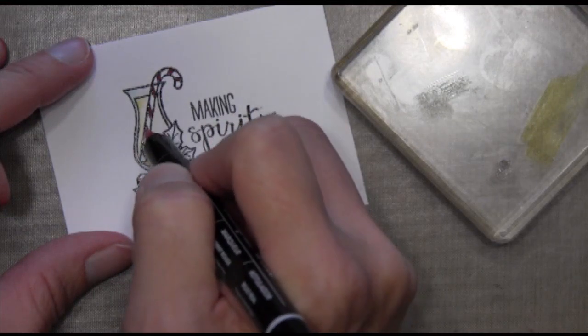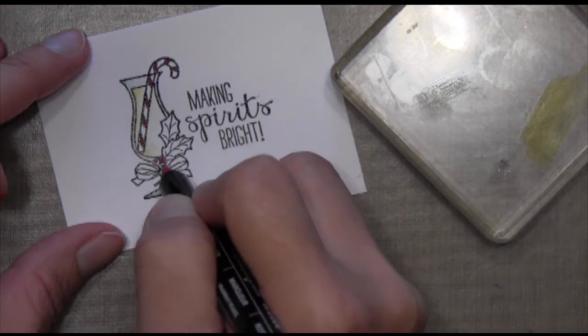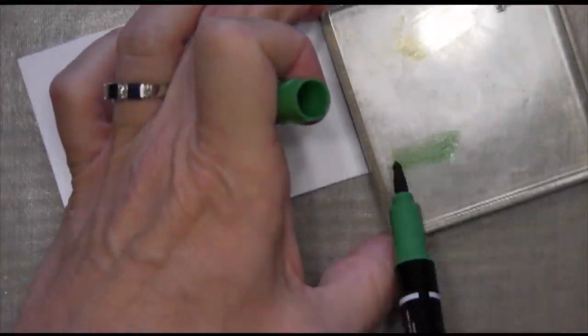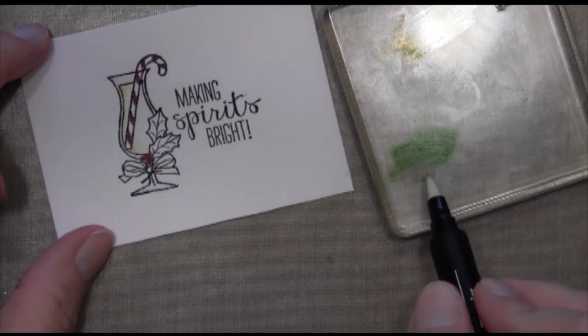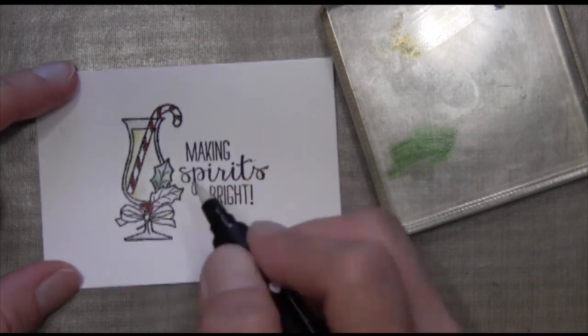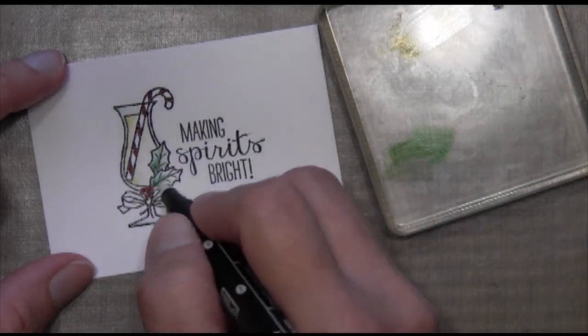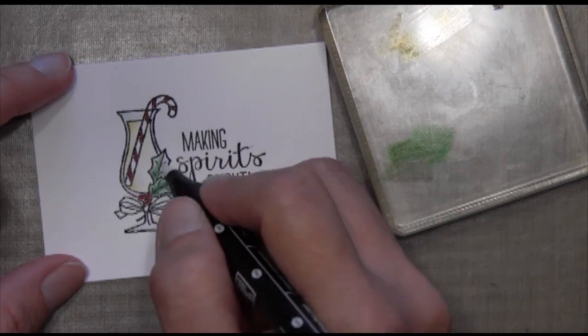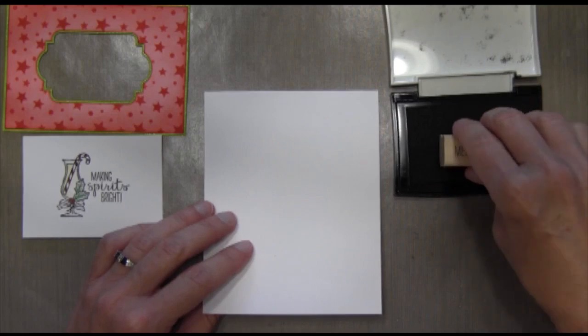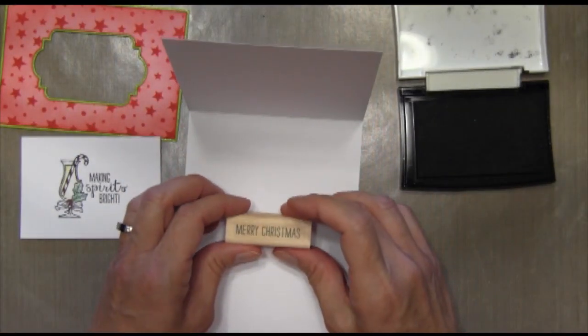I'm going to color my candy cane in with a Real Red marker and then also the berries in there. Then I decided I wanted to color the leaves the same way with my blender pen, so I'm using Garden Green. I'm just going to pick some up with my blender pen. I always start in the darkest area and move outward. If I want to add more ink, I go back and start in with that darkest area and move outward. Just gives a really nice light color. That's all I'm going to do for now. I'm going to go back in and do that ribbon later, but I decided I was going to put my sentiment in there first.